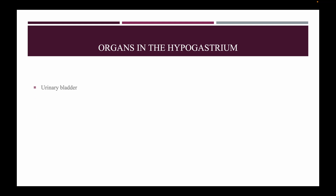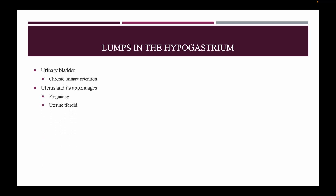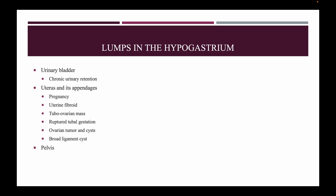Organs in the hypogastrium: urinary bladder, small intestine, sigmoid colon, uterus and its appendages, pelvis, and pelvic bone. Lumps in the hypogastrium — in the urinary bladder: chronic urinary retention. In the uterus and its appendages: pregnancy, uterine fibroid, tubo-ovarian mass, ruptured tubal gestation, ovarian tumor and cyst, and broad ligament cyst. In the pelvis: pelvic abscess.